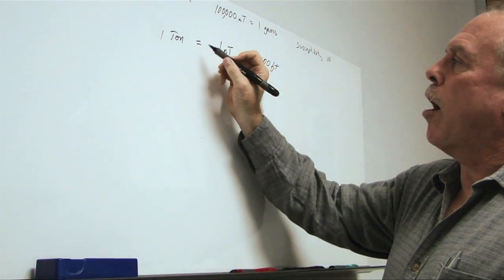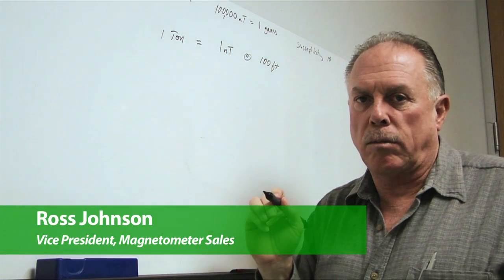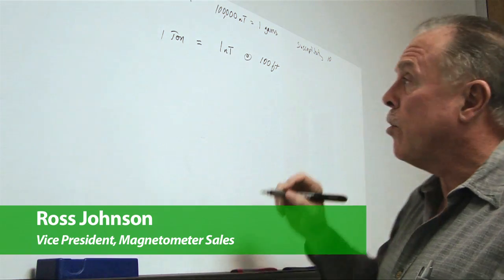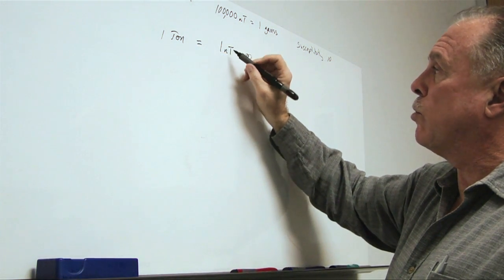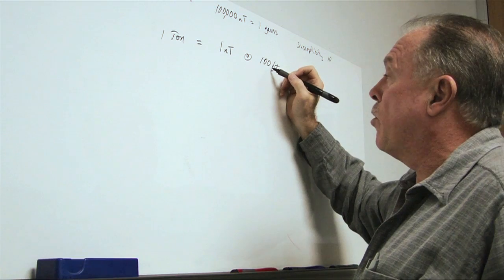So, back to the topic of the distance at which we can see targets. The rule of thumb is one ton equals one nanotesla distortion at 100 feet.